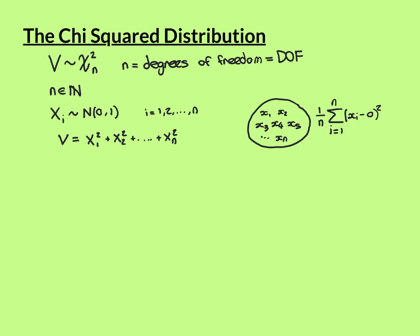A fair question is: why do we care about this sum of squares of standard normals? Why is the chi-squared distribution so famous and so important in statistics? I'm not going to give the complete answer — it's difficult — but I'll give a hint. Let's assume we have a random variable that is standard normally distributed, and we're drawing a sample from it.